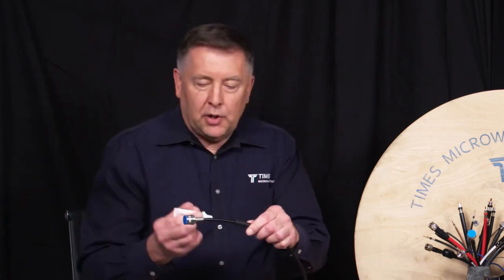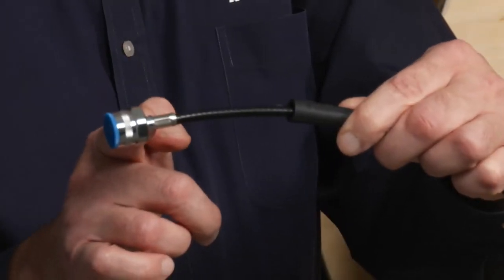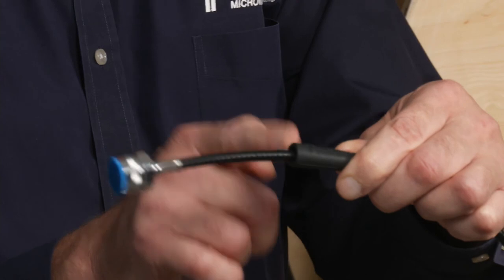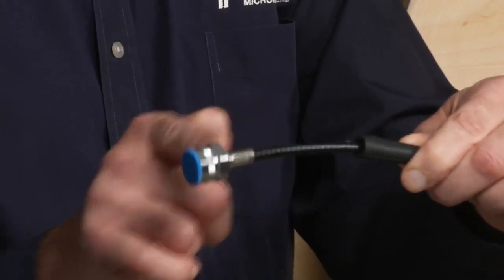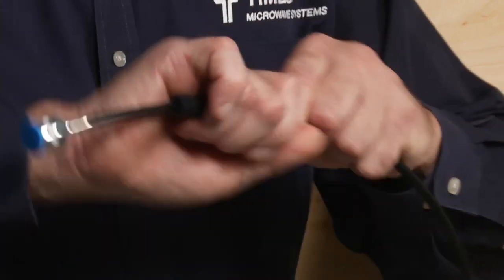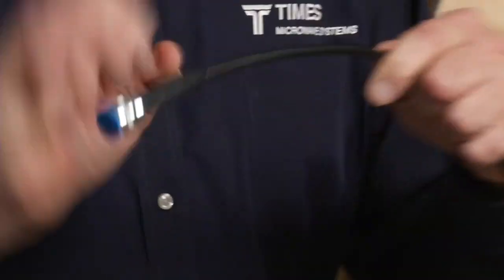There's ribs in the back of the connector, also on the TCA connectors. Just ribs molded into this boot. The ribs inside this boot will actually lock onto these ribs. Why do you need the boot? The boot is a strain relief. Strain relief is always important. You don't want to make a real tight bend behind a connector.